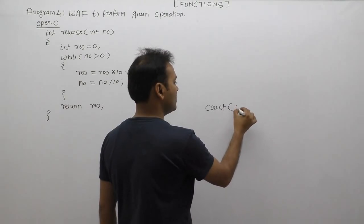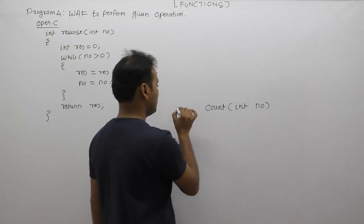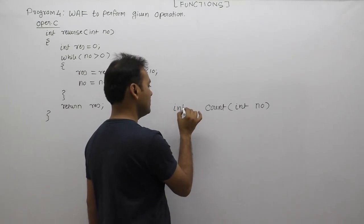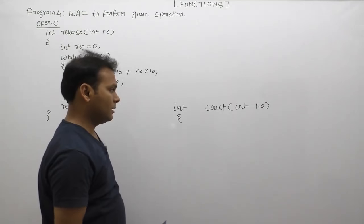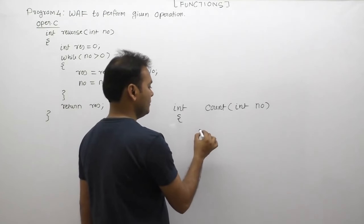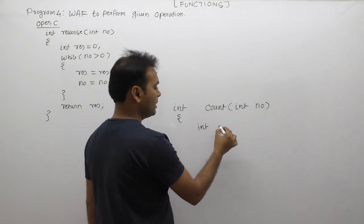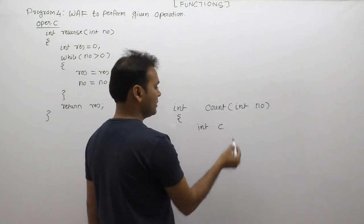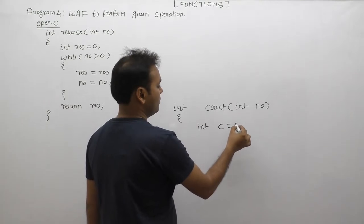Next one, required input is again a number. Plus digits count. That's why we are taking return type as integer. Next one, declaring result variable, means finally digits. We can say count, c, with the initial value at zero.